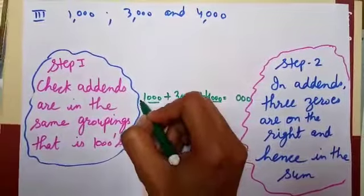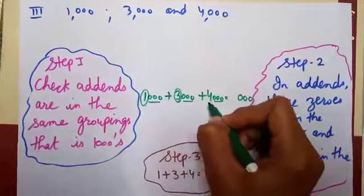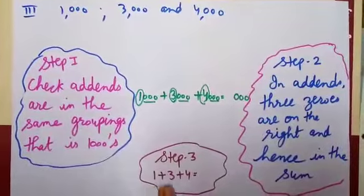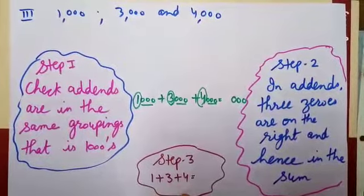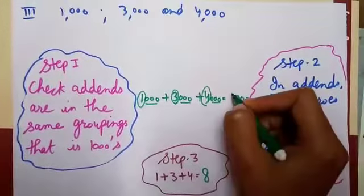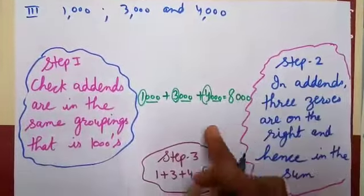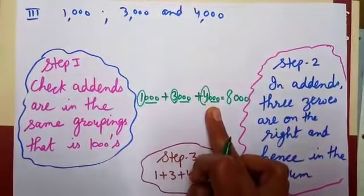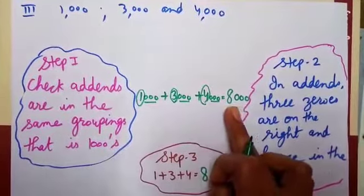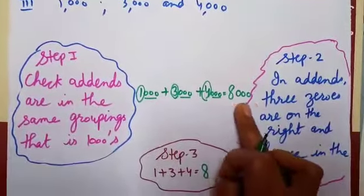Now I will add 1, 3, and 4. 1 plus 3 plus 4: 1 plus 3 equals 4, 4 plus 4 equals 8. So I will write 8 here. 1000 plus 3000 plus 4000 equals 8000. The sum is 8000.